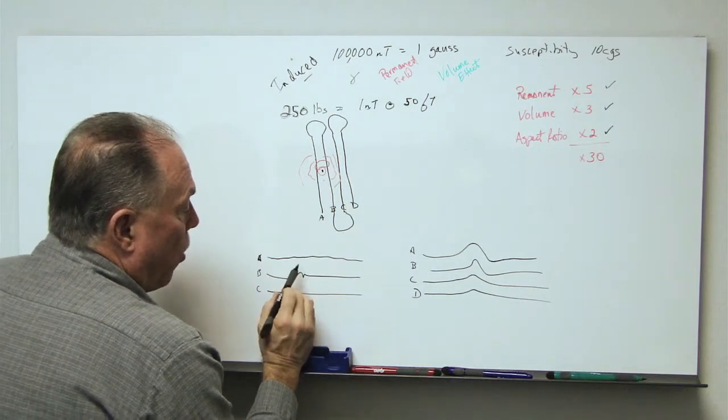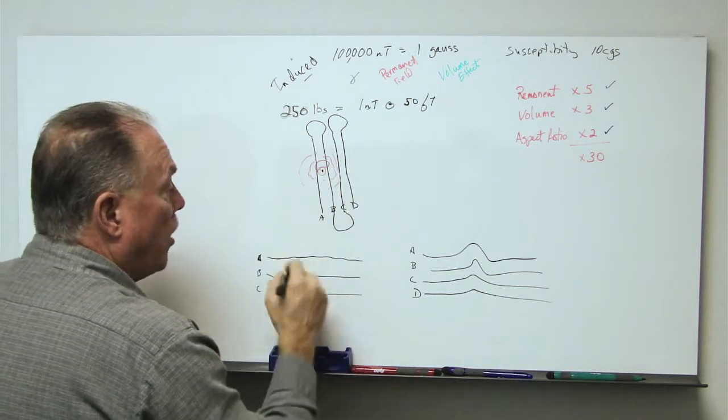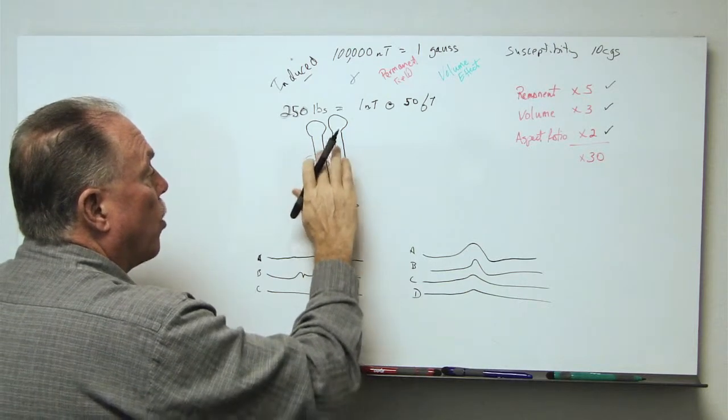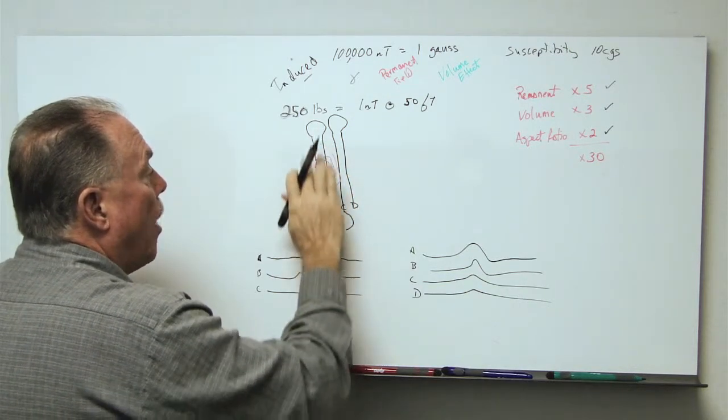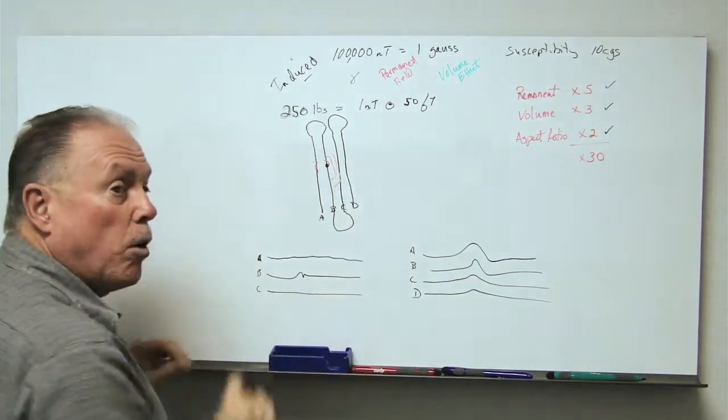Then we really don't know where it is. And in fact, when we end up making a map, there's only one solution for us. And that is to actually put it on line B, because that's the only place we saw it.